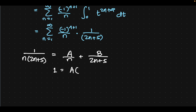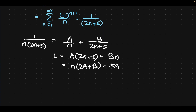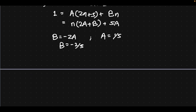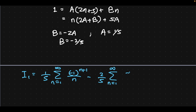So we have 1 equals A times 2n plus 5 plus B times n. Matching coefficients: 2A plus B equals 0 and 5A equals 1, which means A equals 1 fifth and B equals minus 2 fifths. This gives us the partial fraction decomposition as minus 2 over 5n plus 1 over 2n plus 5.